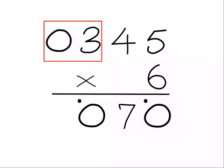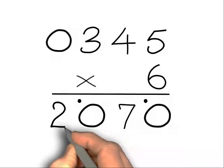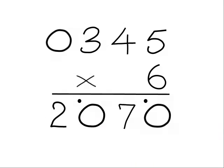Moving over again, we're at 0, the neighbour is 3, so half of the 3 is 1 plus the carry is 2. So we write down 2 and that's our answer, 2,070.